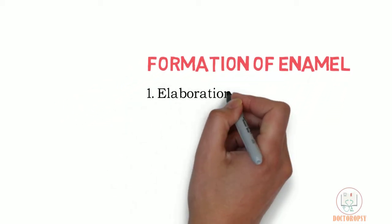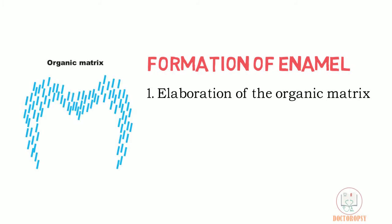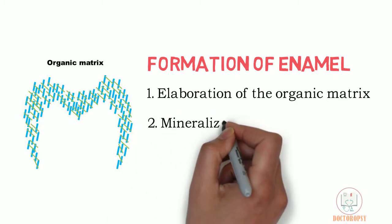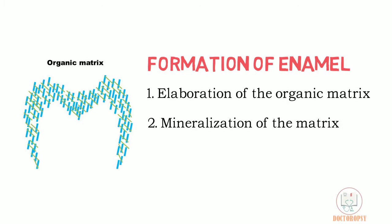The formation of enamel is a multi-step process and problems may arise in any one of the steps. The three major steps are: first, elaboration of the organic matrix — ameloblasts lay down enamel proteins in a definite pattern according to the morphology of each tooth. Second, mineralization of the matrix — mineralization begins on this enamel matrix, but this calcification is only partial, taking place in the spaces between the organic matter.